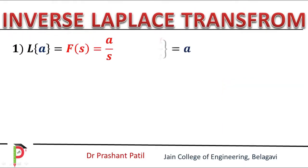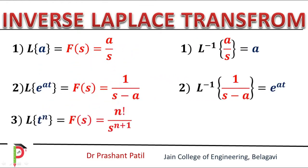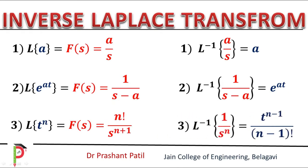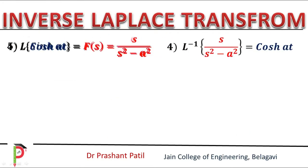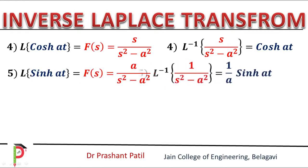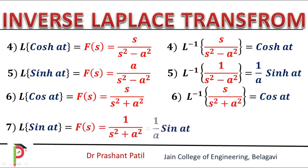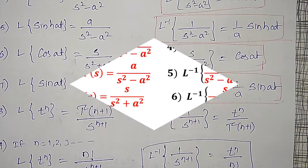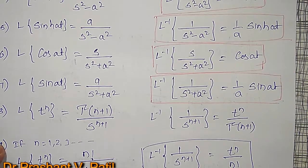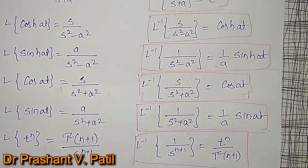For some standard functions: inverse Laplace transform of A/S is A; inverse Laplace transform of 1/(S minus A) is e^(At); inverse Laplace transform of 1/S^n is t^(n-1)/(n-1)!. Also, inverse Laplace transform of S/(S²-A²) is cosh(At), and 1/(S²-A²) is (1/A)sinh(At); S/(S²+A²) is cos(At), and 1/(S²+A²) is (1/A)sin(At). To find inverse Laplace transforms, the denominator should be in one of the 6 standard forms.